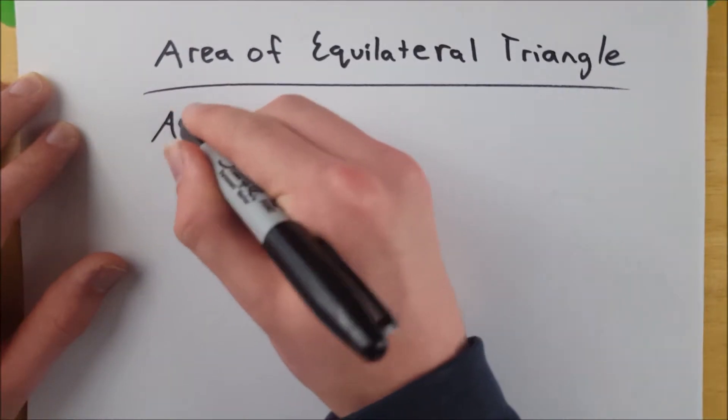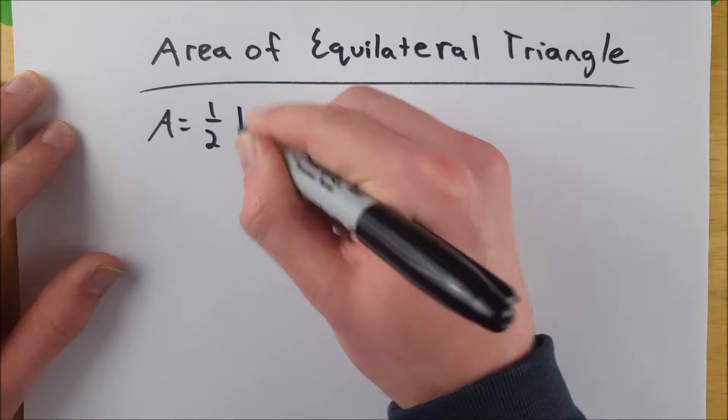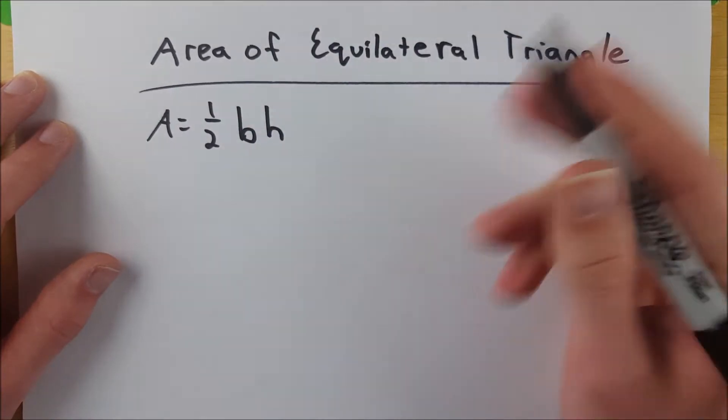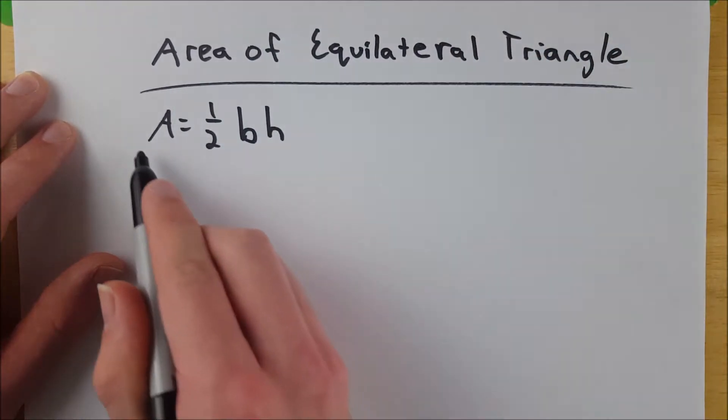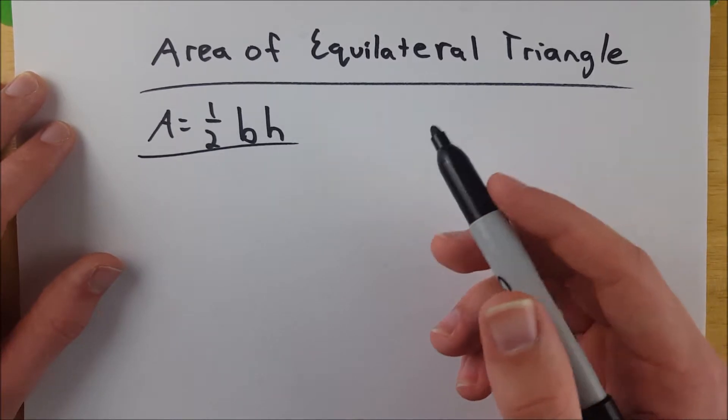We know we can use the formula area equals one-half base times height to find the area of any triangle. We can use this for any generic triangle - it works just fine.